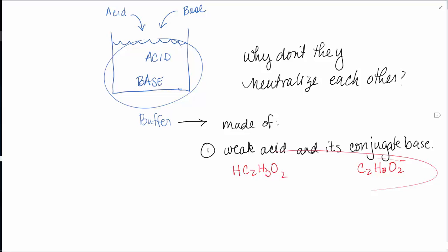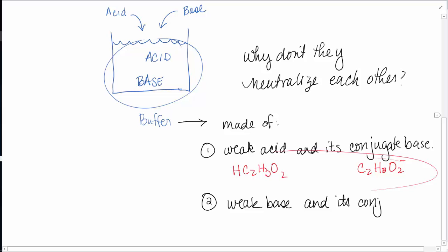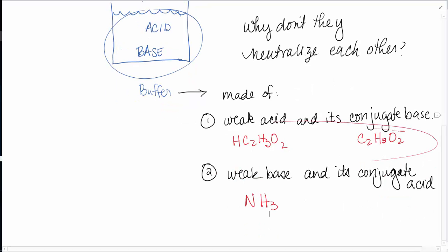Or the other possibility could be a weak base, the exact opposite of this, and its conjugate acid. So an example might be ammonia, that's a weak base. You might ask yourself, do I know what the conjugate acid would be? Remember, they differ by one hydrogen ion, and it would gain a hydrogen ion, so it would become NH4+. So if I put those two things in a beaker, I would make a buffer and have both an acid and a base.